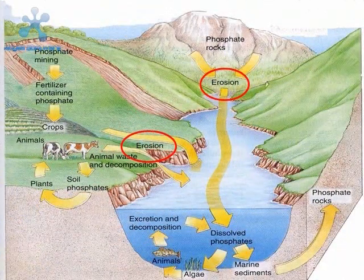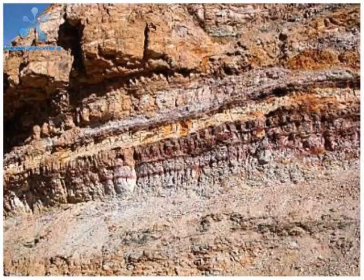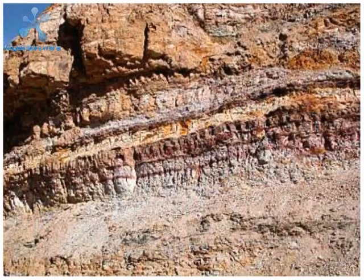The largest store of phosphorus is found in sedimentary rock. The cycle begins when it rains, causing weathering and removing phosphates from the rocks. These phosphates are then distributed throughout the soils and water.